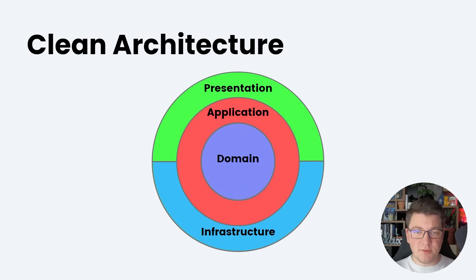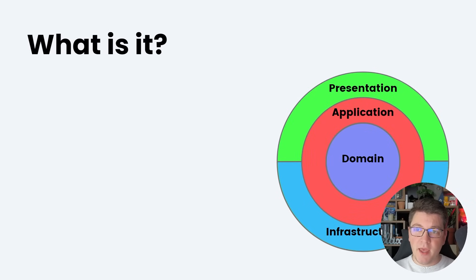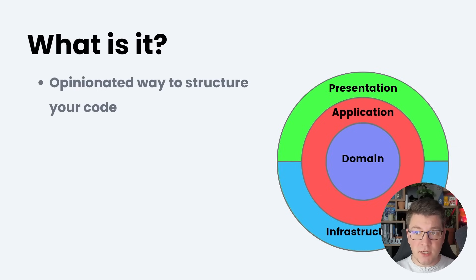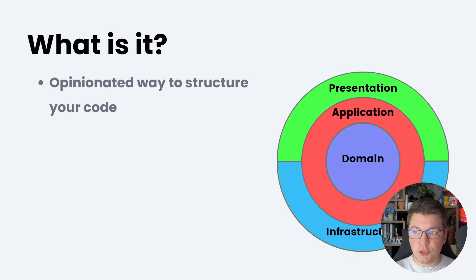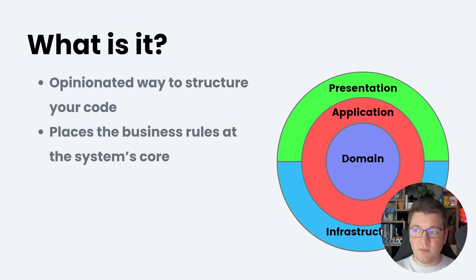This is the visual representation of the clean architecture, and I first want to explain what the clean architecture is. It's an opinionated way to structure your code — the clean architecture is prescriptive because it defines how you should structure your applications. You should be placing your business rules at the system's core, which is represented with the domain and the application layers.